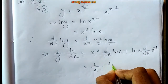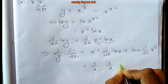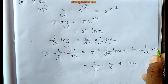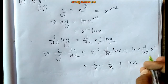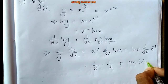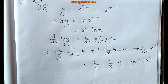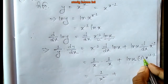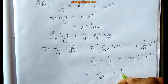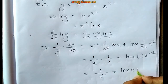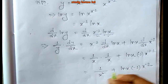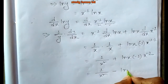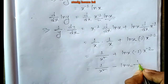So we get (1/x) times (1/x) plus ln x times (-1 times x to the power minus 2). This means 1/x squared plus ln x times (-1/x squared). We can factor out 1/x squared.